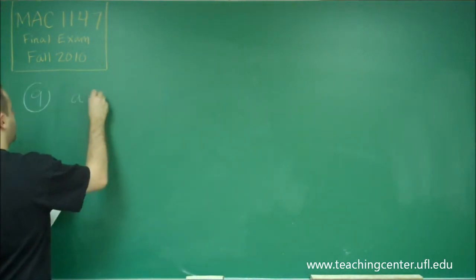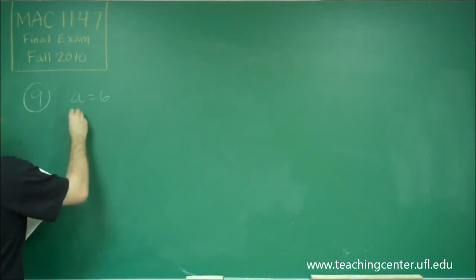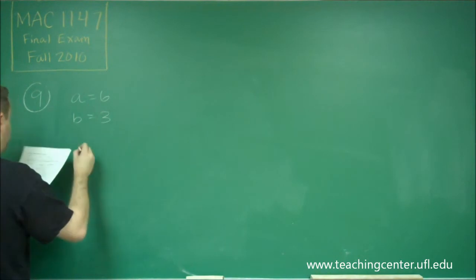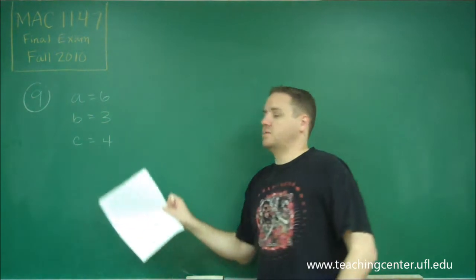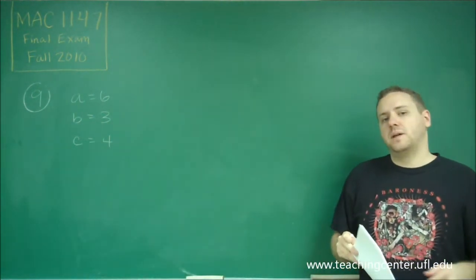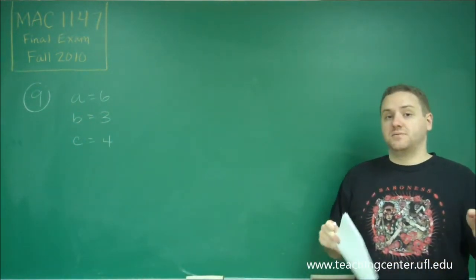So we have three sides: we have six, three, and four. Recall that for sides, we always use lowercase letters, and the capital letters are the angles that are opposite from those sides.